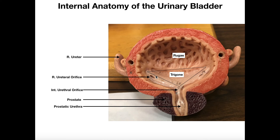In one of the next videos, probably at the end of this playlist, we'll discuss how urination occurs — it's called the micturition reflex, and it's a bit more complicated than you might originally think. We're also going to talk about the general regions of the urethra in males, because males have a much longer urethra. Hopefully this video helped you out.